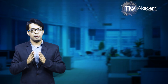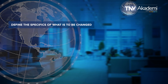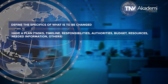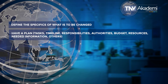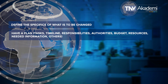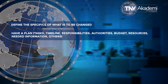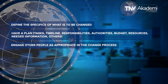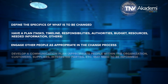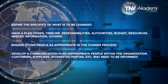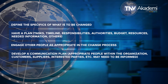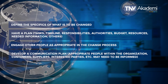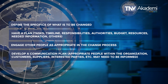Steps to implement changes: Point 1 - Define the specifics of what is to be changed. Point 2 - Have a plan, including task, timeline, responsibilities, authorities, budget, resources, needed information, and others. Point 3 - Engage other people as appropriate in the change process. Point 4 - Develop a communication plan. Appropriate people within the organization, customers, suppliers, interested parties, etc. may need to be informed.